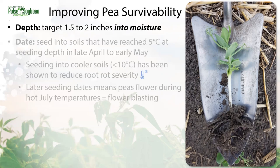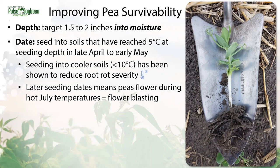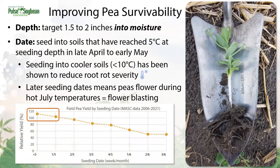We also want to think about seeding date. Seed in April or early May into soils that have reached at least five degrees Celsius at depth. Warmer soils mean faster, more even emergence, but research also shows that seeding into soils below 10 degrees Celsius has reduced root rot severity, which might be impacting plant stands. Delaying seeding also means peas are flowering in the heat of summer and can shrivel up flowers if it's too hot. Generally, earlier seeding dates perform better for peas. MASC data from the last 15 years indicates greater yield potential with earlier seeding dates, targeting the last week of April and first week of May, which results in greater than 100% relative yield.